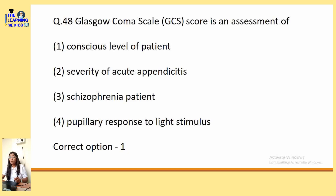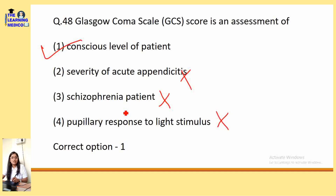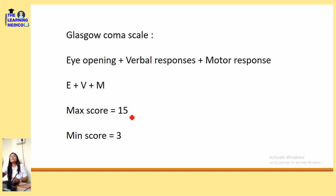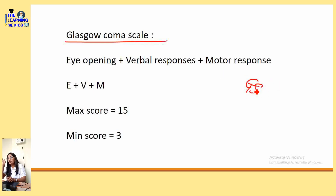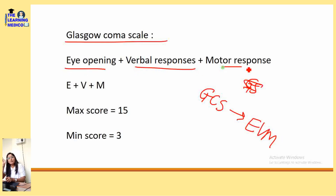Glasgow Coma Scale (GCS) is used for assessment of consciousness of the patient — not severity of pancreatitis, not schizophrenia. It is used when the patient is in a coma. Remember EVM for GCS: E = Eye Opening, V = Verbal Response, M = Motor Response. Maximum score is 15 and minimum score is 3.